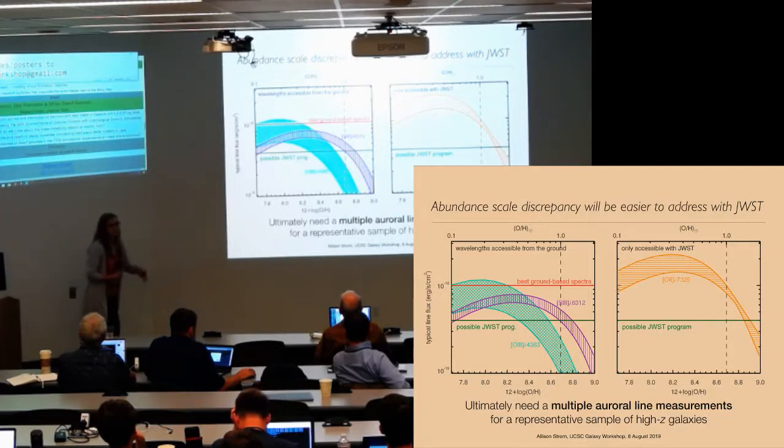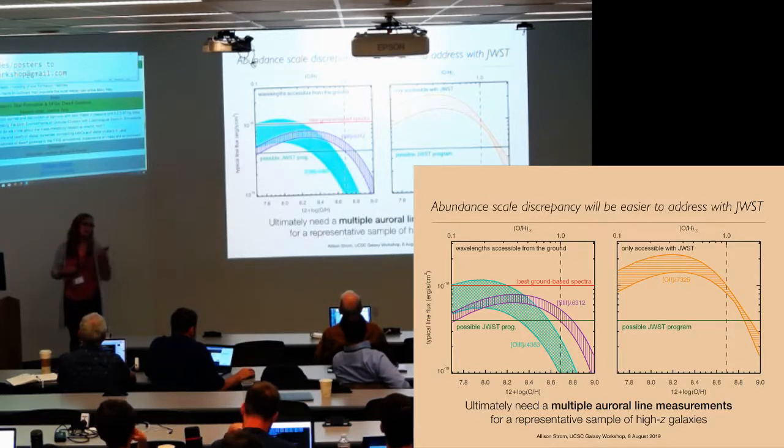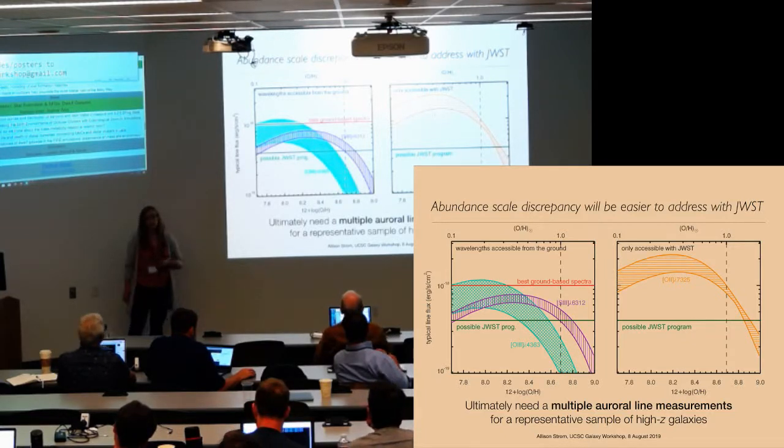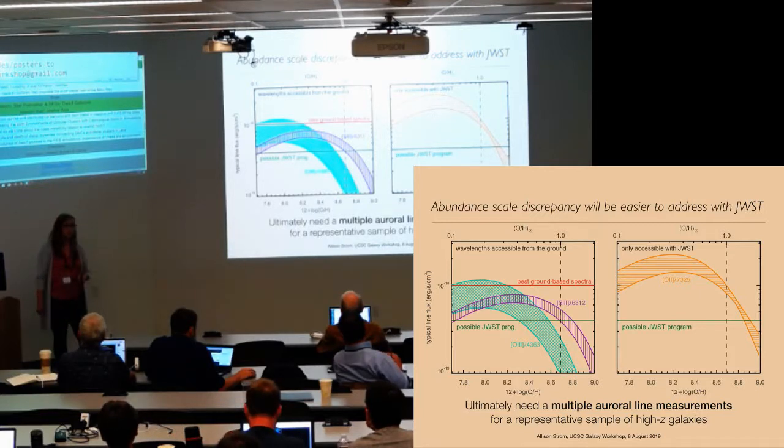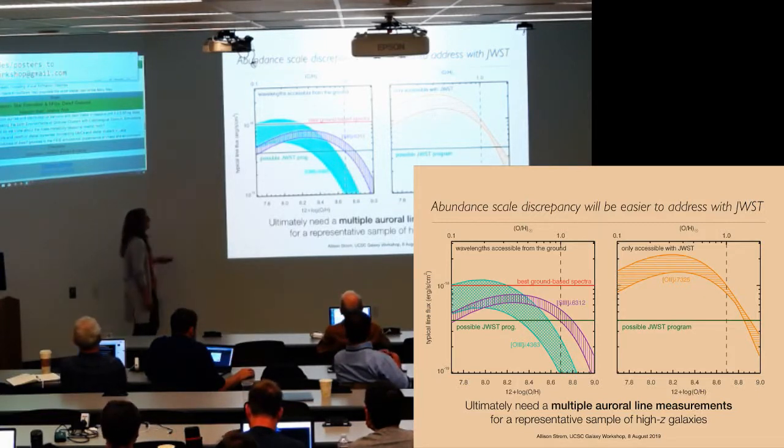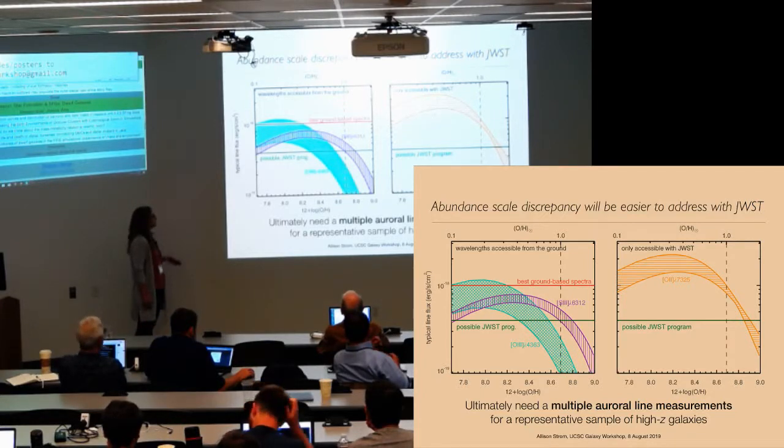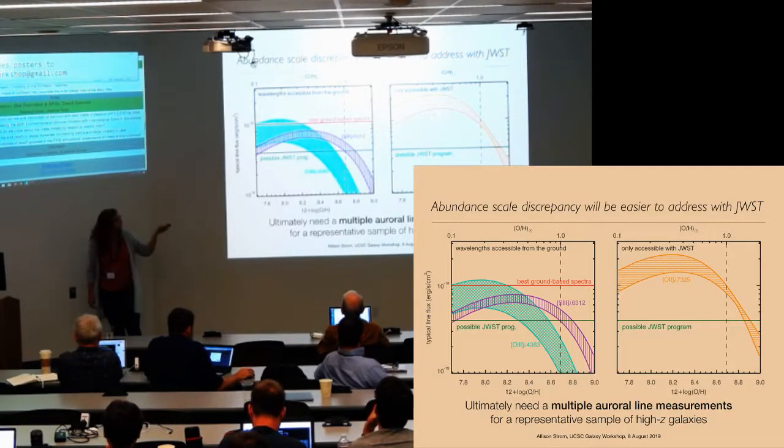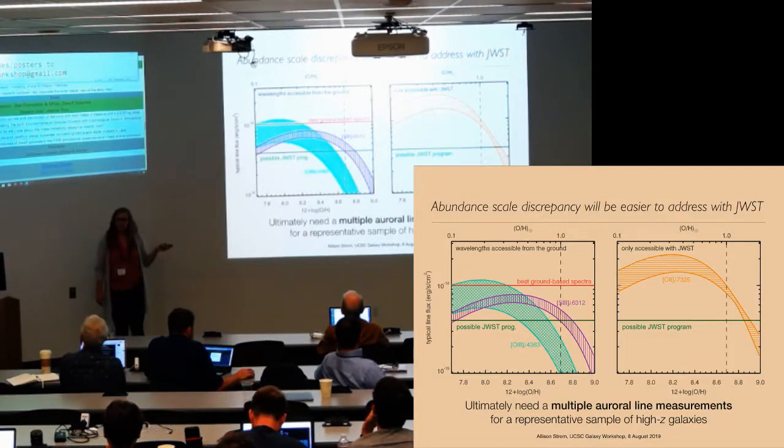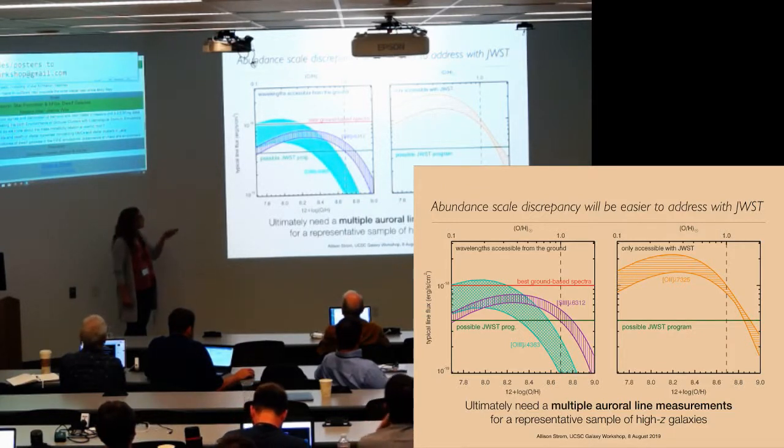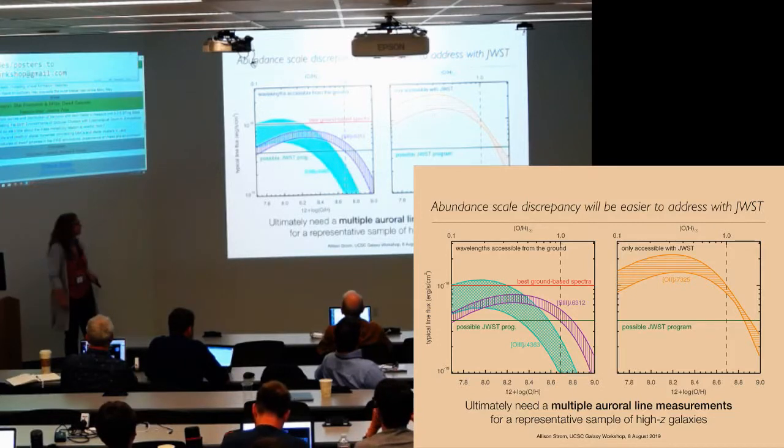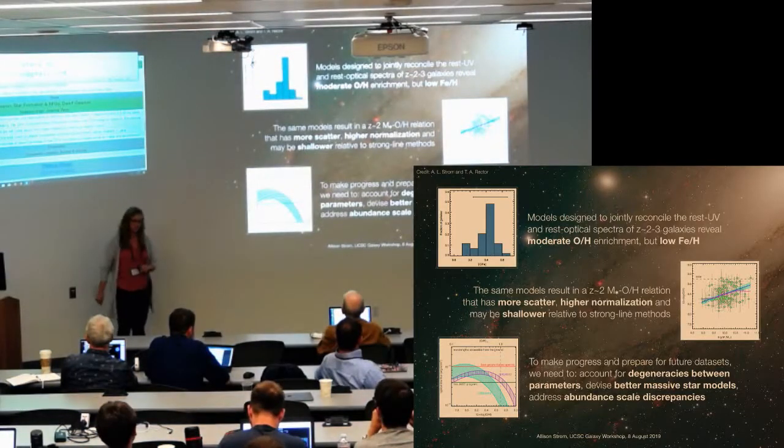And then finally, this issue of the normalization, which I kind of glossed over, is a long-standing issue between sort of direct method, collisionally excited abundance scales, which tend to be much lower than recombination line scales. And this is something that's probably going to have to await James Webb, where we have the sensitivity to go get multiple auroral line measurements for a representative sample of high-redshift galaxies. 4363 is generally the gold standard, but it actually becomes, even for James Webb, kind of out of reach at relatively high, or sort of moderate oxygen abundances. Also, there's an issue of an iron line at 4360, which sort of comes up as you go towards higher oxygen abundances. But collectively, you should be able to sample a number of these line ratios, or these lines with James Webb. So I will leave you with my conclusions and take any questions.